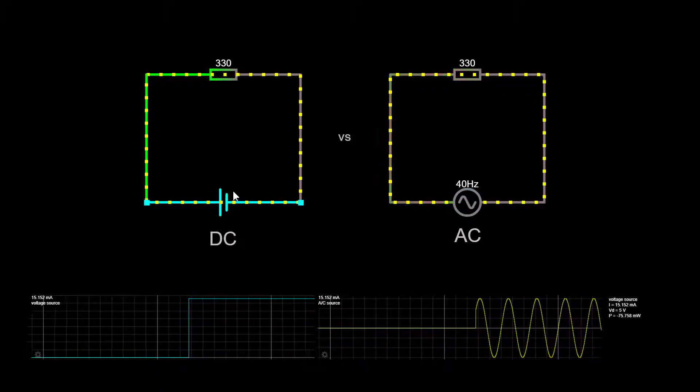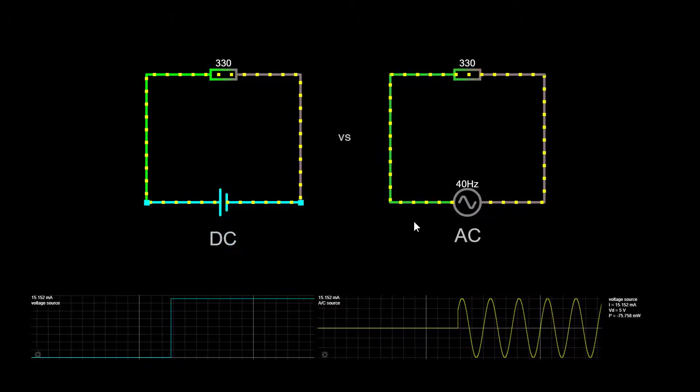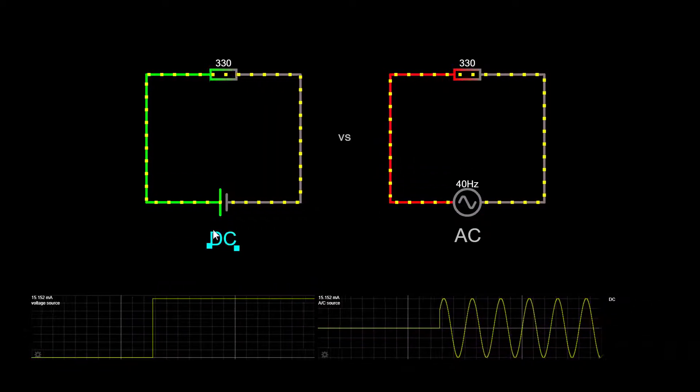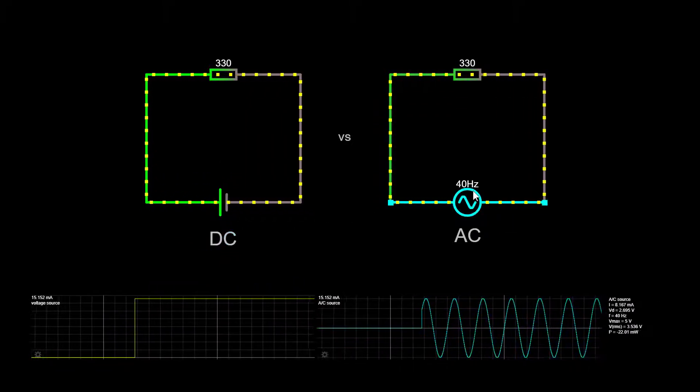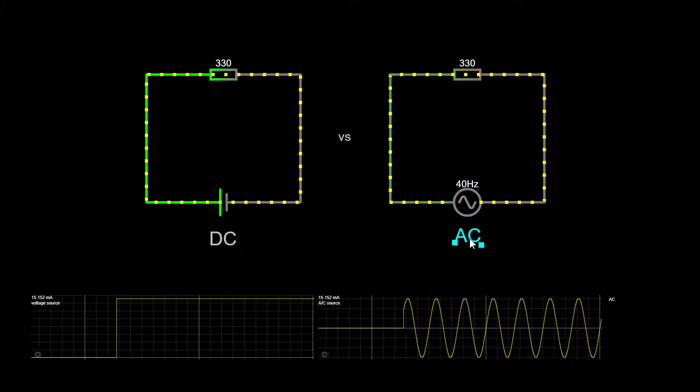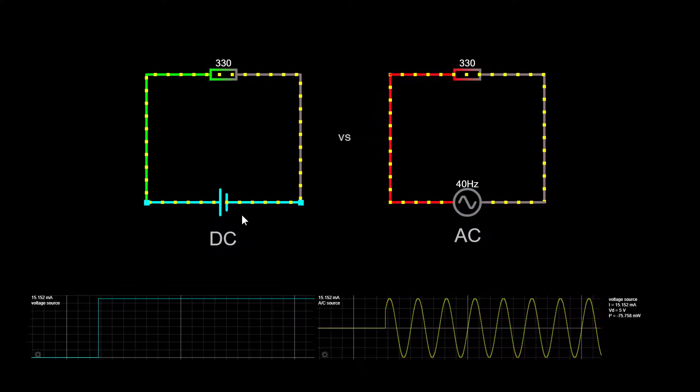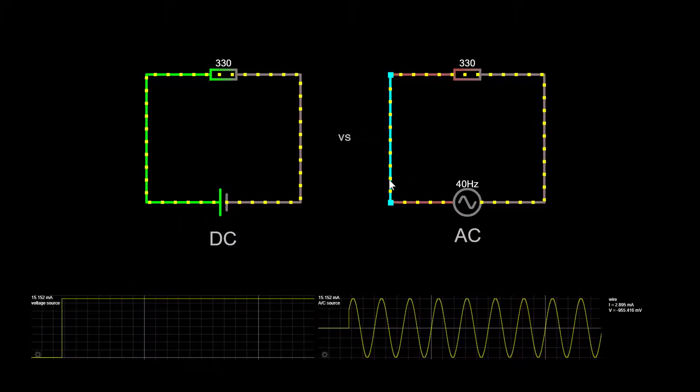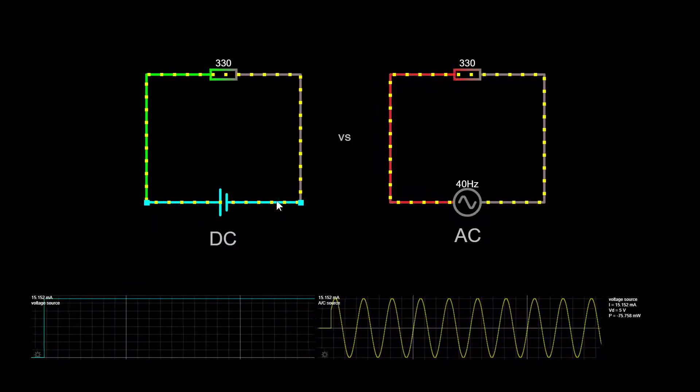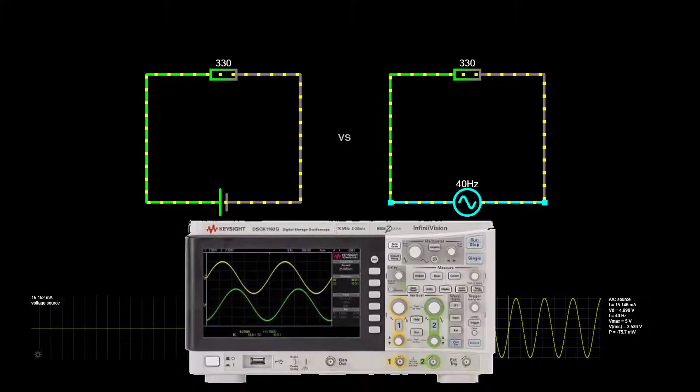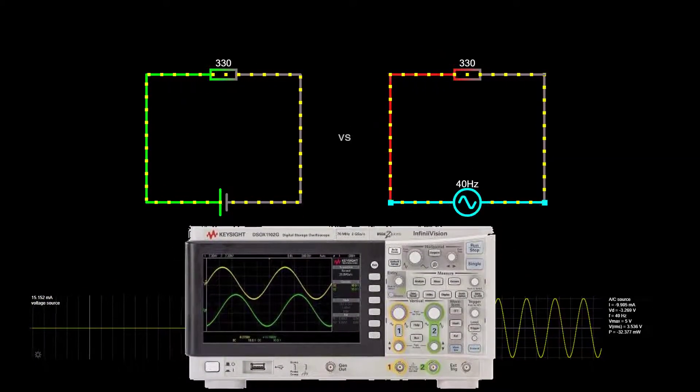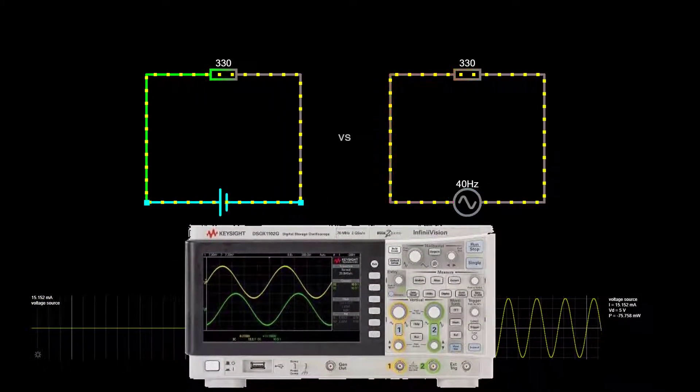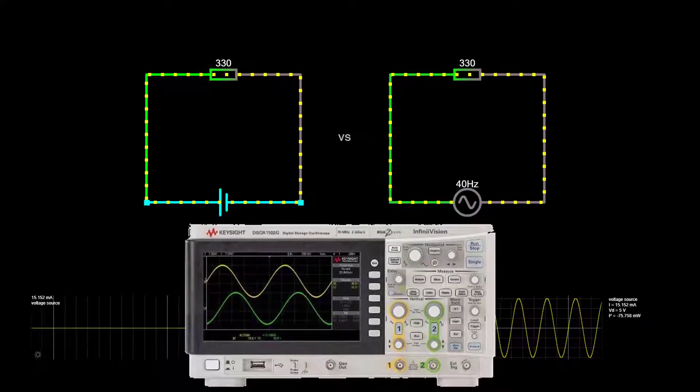Alright, here we are. The first circuit uses a simple battery. Remember that a battery will always produce a DC voltage, while on the other circuit, we use an AC power source. Again, what you are interested in is how the current, which is represented by these little yellow squares, move in our circuit. I assume you know what an oscilloscope is, and if not, you better look it up on the internet, and if you want to be really a cool person, you should buy one.